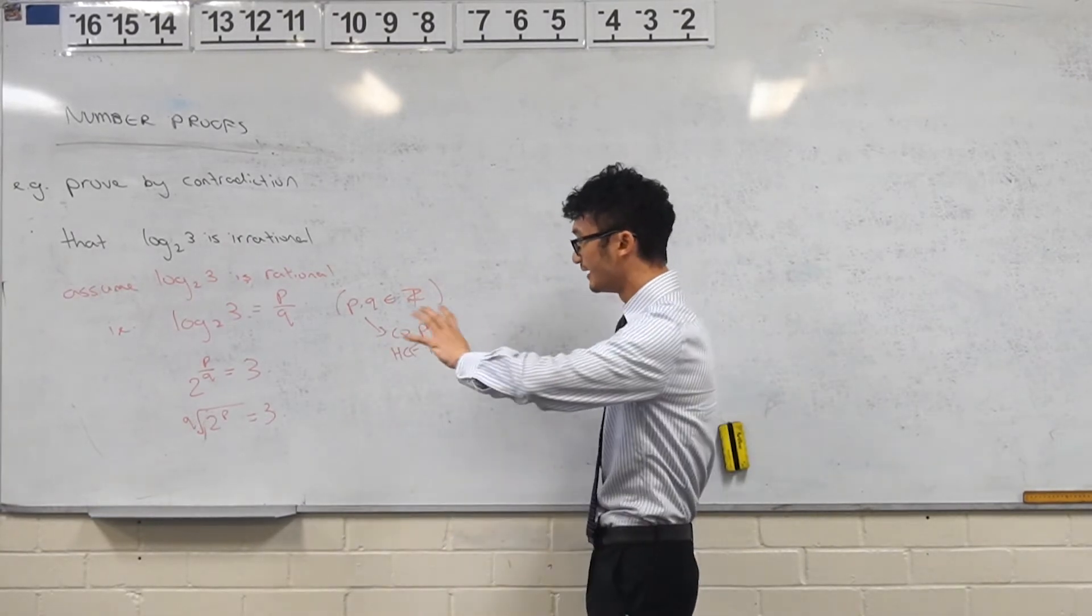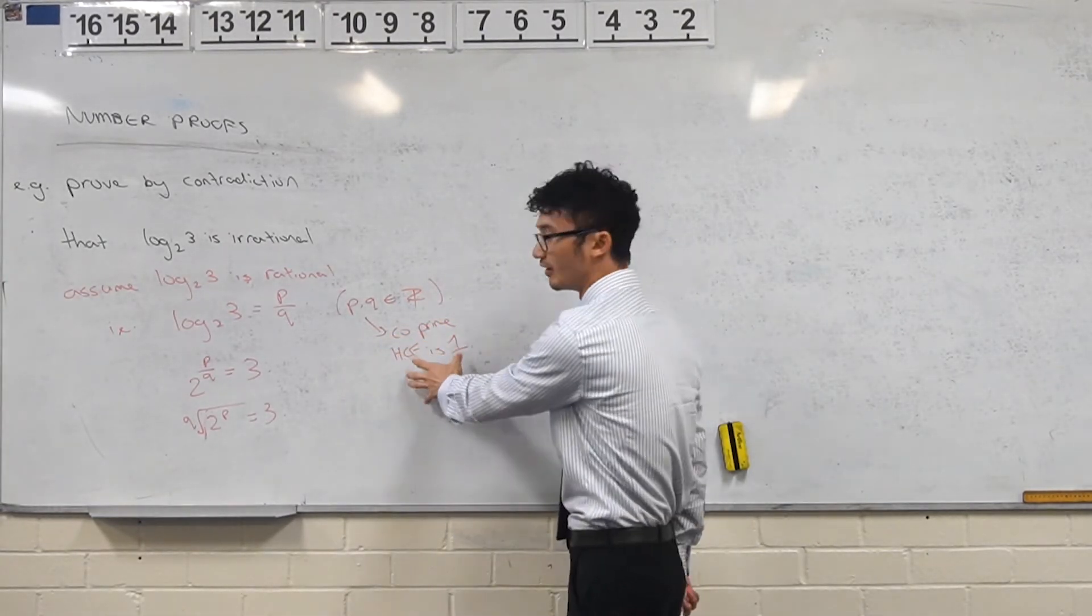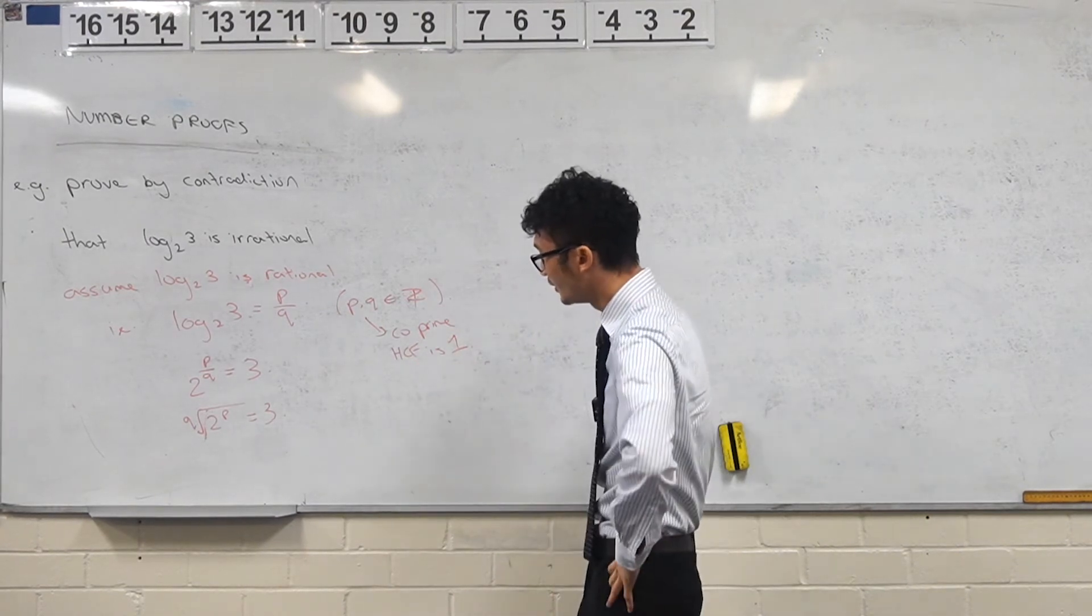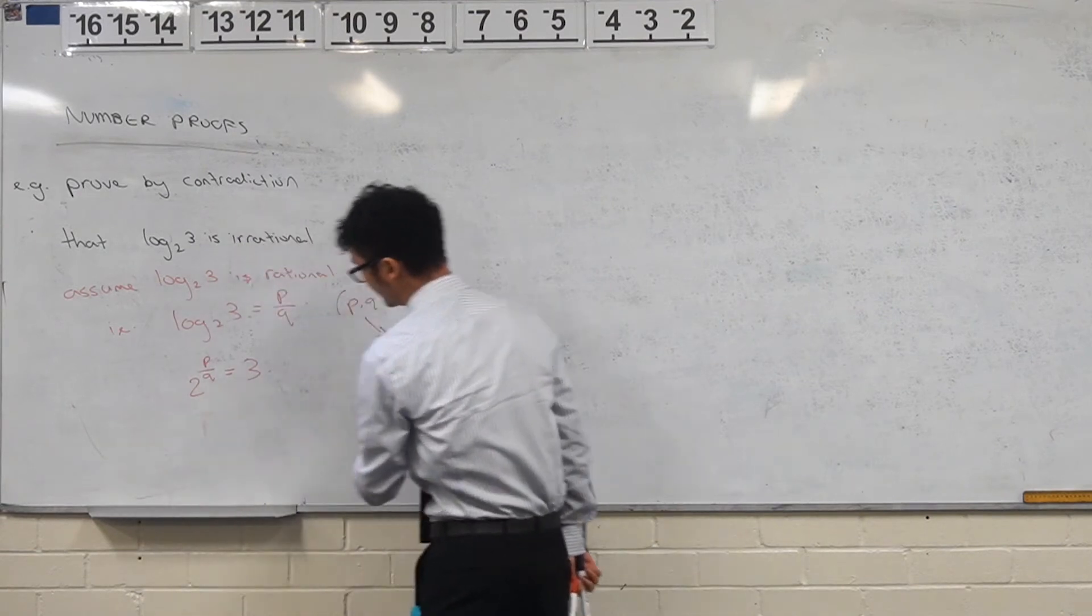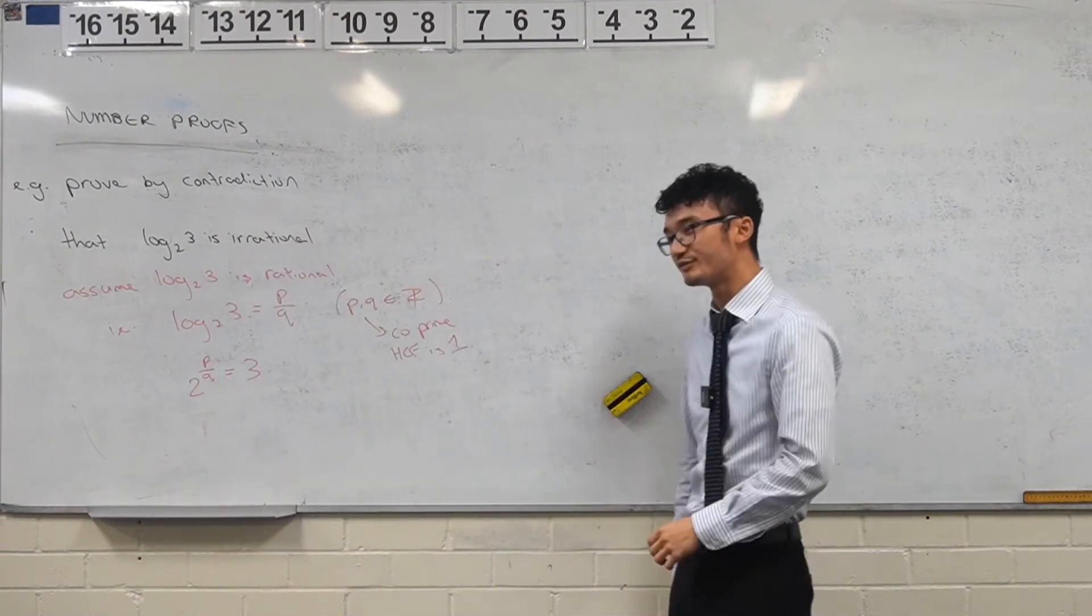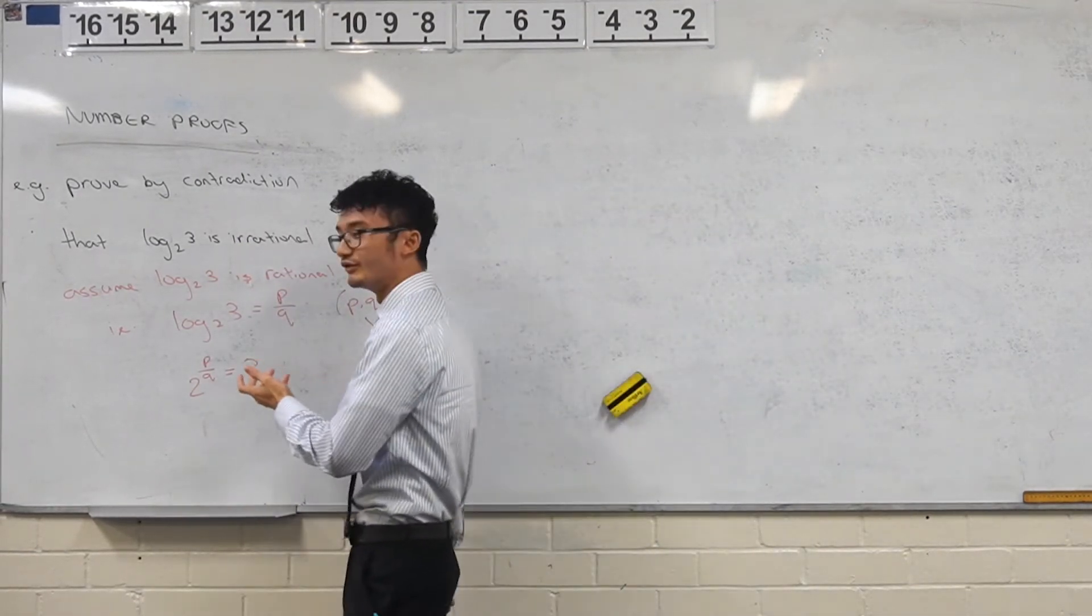Like before when we had that coprime kind of thing. Right. Let's go back. Let's go back a step. Right. We want to have some kind of comparison between two and three. Right.